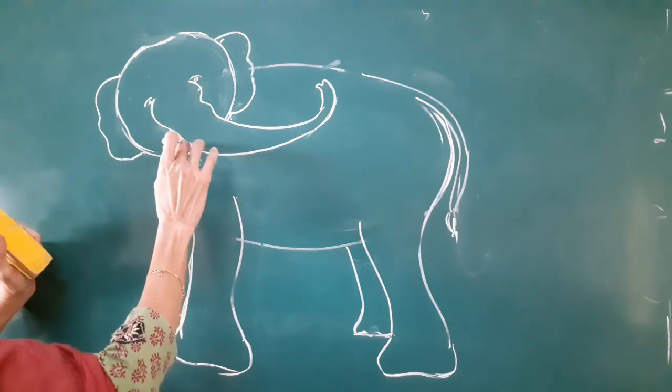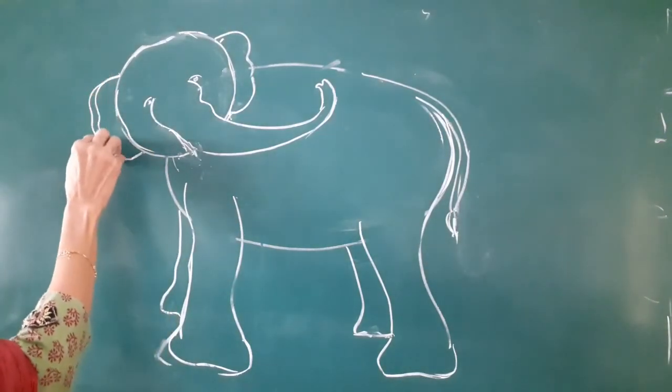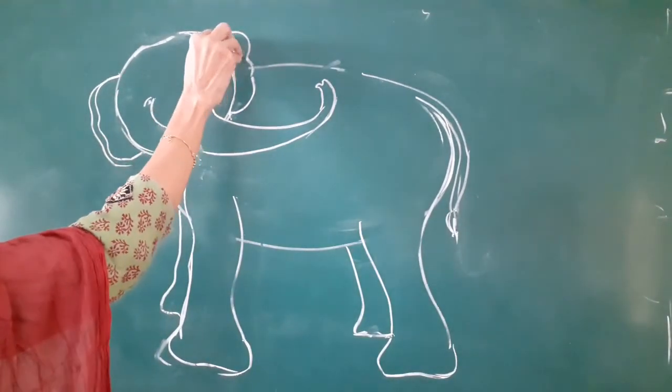And you have to do the double line here. So this is your elephant.